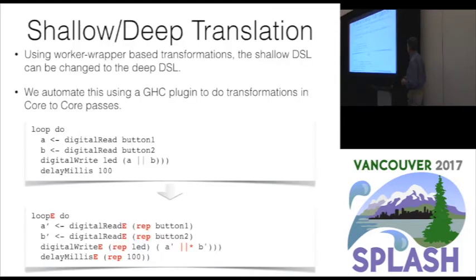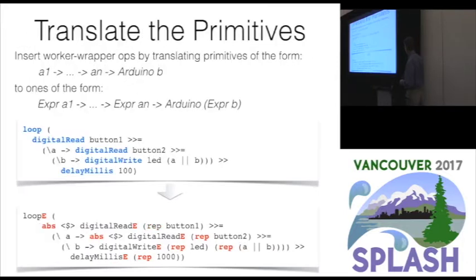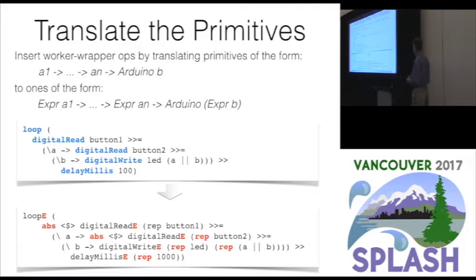To do the transformations, here's the shallow version we saw before and the deep version we want to get to. We need to replace the primitives and also lift the constants — the button values, LED pin values, delays, etc. The first step is to insert these worker-wrapper functions and then move them around in the code. The idea is to eventually eliminate most of what we've inserted and leave ourselves with the deep language we want.